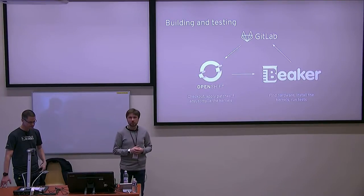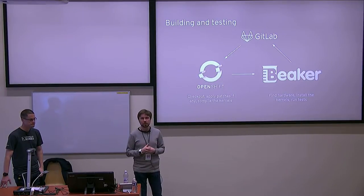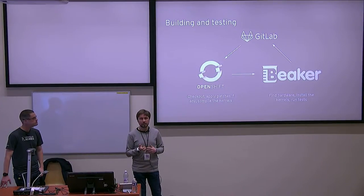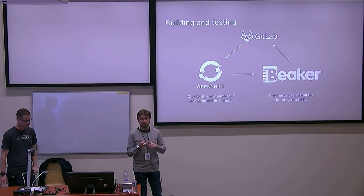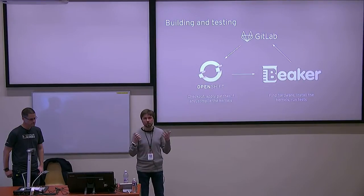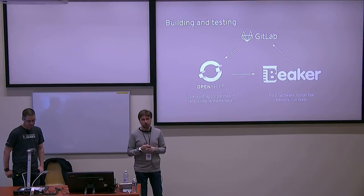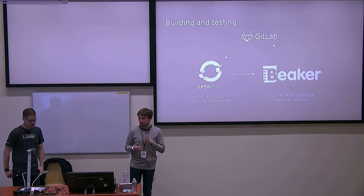When the kernels build, we hand them off to the Beaker system. Beaker is a system for maintaining the inventory of all the hardware available for testing, including the machines themselves, their peripherals, CPU parameters, and architecture. It also maintains the distributions we have for testing, gives us the ability to turn machines on and off and install the operating system. Most importantly for testing, it supports specifying which hardware you want — a specific architecture, a specific CPU — which allows us to target tests to specific hardware.